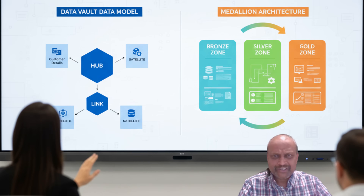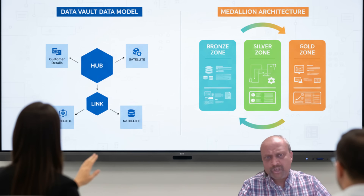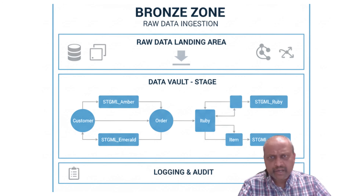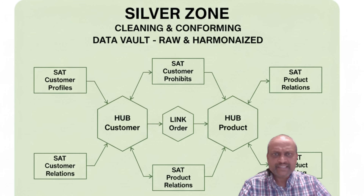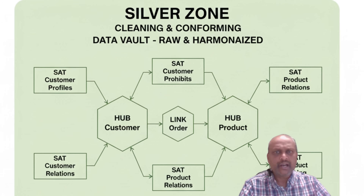Medallion architecture is how we bring order to data at scale. Bronze holds raw data, unfiltered and immutable. Silver takes the raw input, cleans it, and enforces structure and quality.